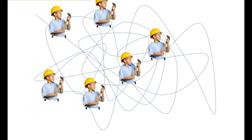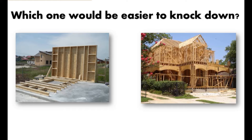Look at these two buildings. Imagine we took that kid with the hammer and dropped him off on the building on the right — we let him walk onto that job site and told him to tear it down as fast as he could. He's not going to be able to do it; the building is way too developed. But the building on the left is in its incipient stages with very little framing, so it would be easy for him to knock it down. Why is this important? Because TPA does not work well on old clots. The longer the clot is there, the more fibrin builds up and the stronger it gets.